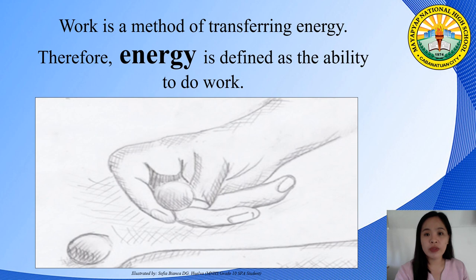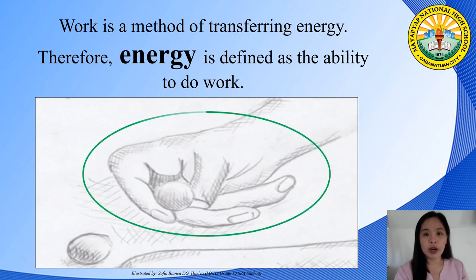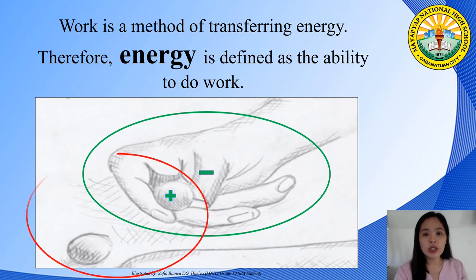Work is a method of transferring energy. Therefore, energy is defined as the ability to do work. When work is done on the first marble, the first marble gains energy while the person who shoots the marble loses energy. Similarly, the first marble does work on the second marble — it loses energy while the second marble gains energy. This shows that when work is done, energy is transferred.